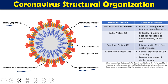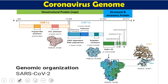These different proteins have different functions. The nucleoprotein N binds with RNA to make the nucleocapsid. The envelope protein interacts with M to form the viral envelope. The membrane protein has assembly and other functions. The most important protein of the coronavirus is the spike protein S, which is responsible for recognition of the host cell and binding to it.